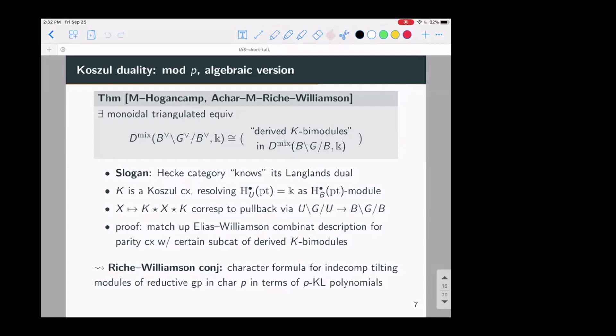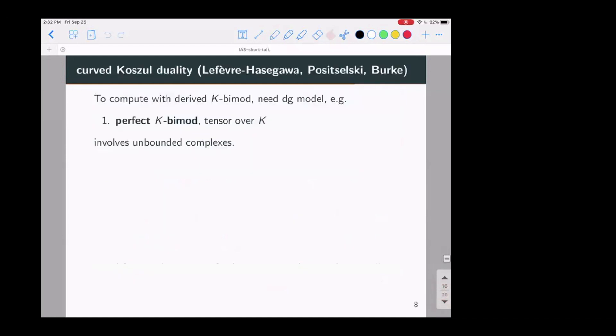So I want to just say a little bit about what exactly this right hand side derived K-by modules is. So usually you can define the derived category of modules over a ring by saying it's the homotopy category of projective resolutions. So you can do the same thing here. There's a notion of a resolution of a K-by module. You can take perfect K-by modules and then you can use the usual tensor product over K.